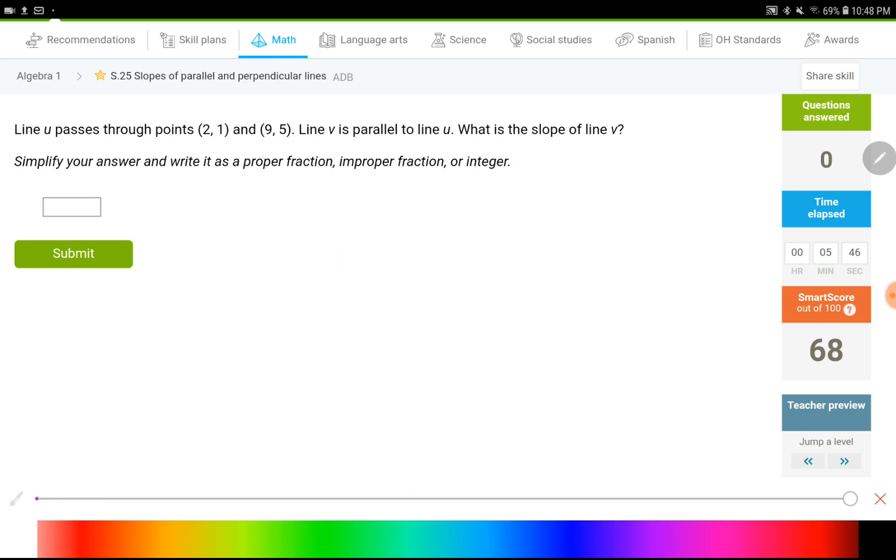Line U passes through these two points. That's my line U. It has two points: 2, 1 and 9, 5. And line V is parallel to line U. These two are parallel. That means their slopes are going to be the same. Whatever the slope of line U is would be the same as line V, which is what my question is. My question is figure out the slope of line V. So to figure the slope of this guy, I need to figure the purple one out.